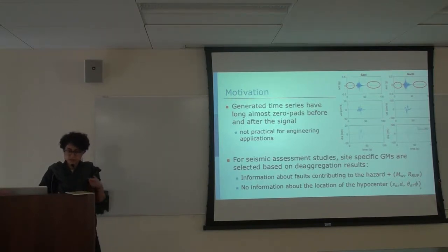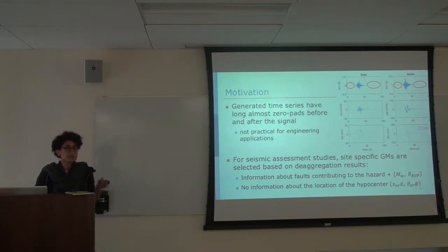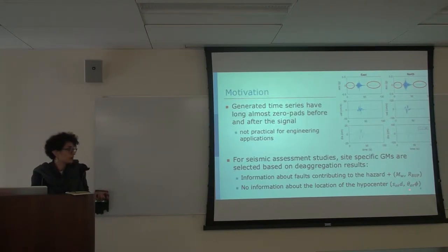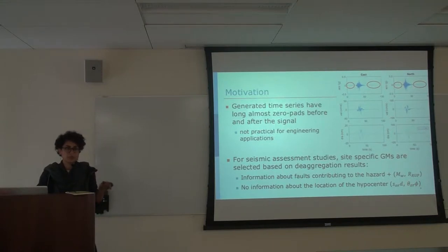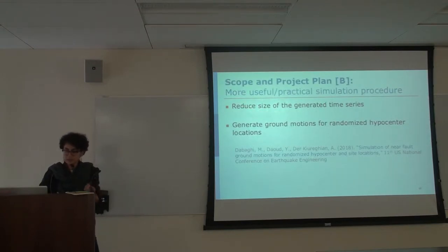Another motivation for the current project is that the information available for seismic assessment studies is usually what fault is contributing to the hazard, its type of faulting, its magnitude, and its distance to our site. But usually we don't have information about the location of the hypocenter and about the directivity parameters. So we're adding a layer into our simulations to provide users with the proper distribution of these directivity parameters with knowledge of only the fault contributing to the hazard and its type, magnitude, and distance to the site.